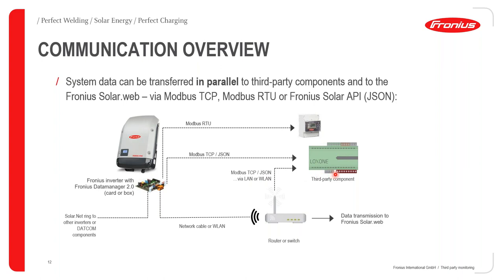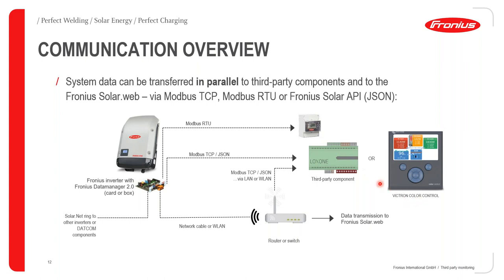It's also possible to communicate with a device like the Victron Color Control in an AC coupled system. This means you can query data and have a wholesome view of the system via the Victron VRM, while also querying data directly from the Fronius inverter using the Fronius API query system.